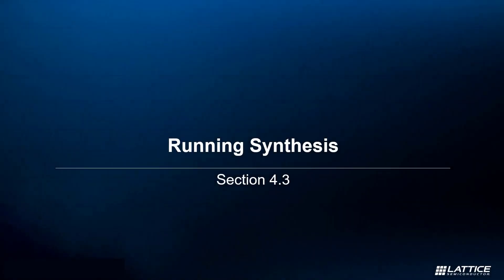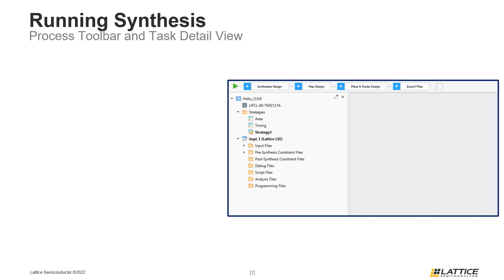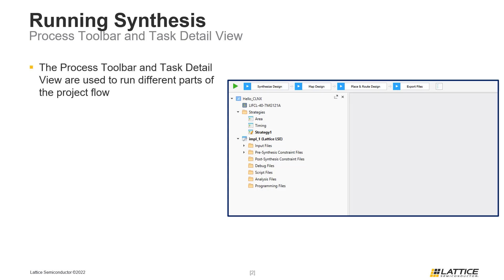Chapter 4, Section 3: Running Synthesis. In this section we will be discussing Radiant's design process toolbar and task detail view, and how they can be used to run different parts of the Radiant project flow.